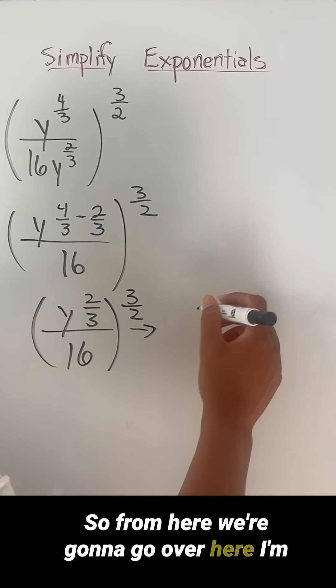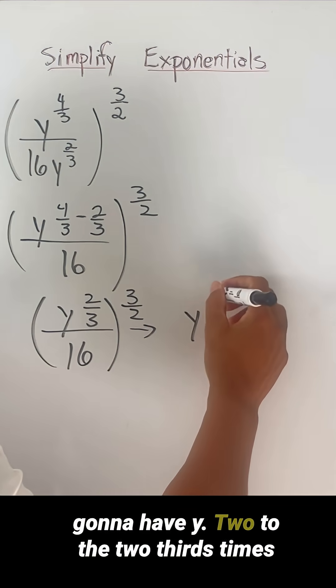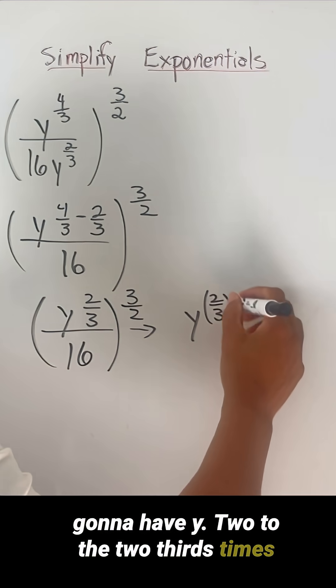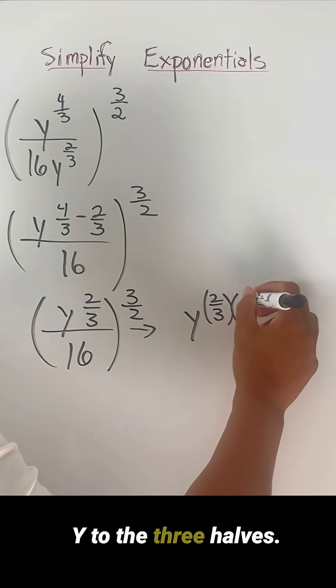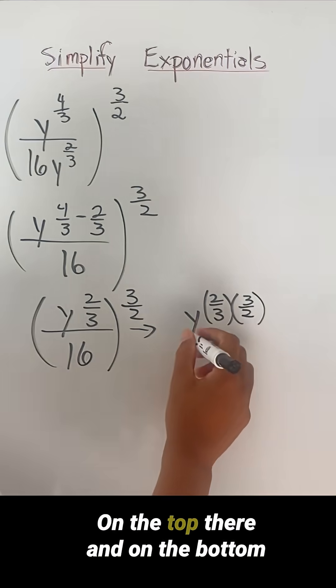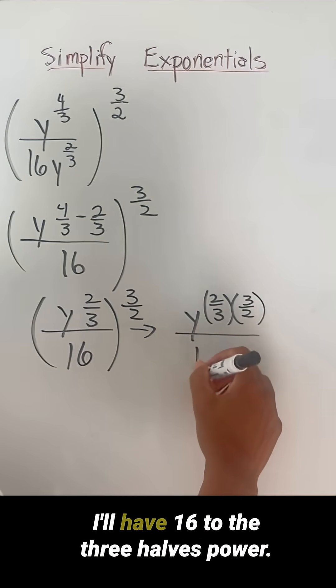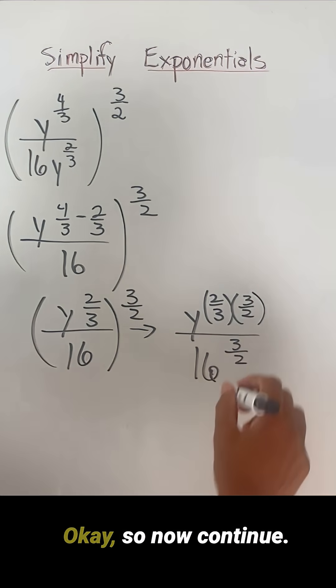So from here, we're going to go over here. I'm going to have y to the two thirds times y to the three halves. Okay, on the top there. And on the bottom, I'll have 16 to the three halves power.